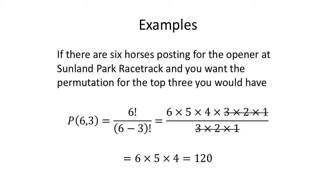The example I use most commonly for permutations takes me to the horse racing track. There's six horses posting for the opener at Sunland Park racetrack and you want the permutations for the top three. There are six horses running. You want to pick win, place and show. That's the top three. You'll have 6 factorial over (6 minus 3) factorial. But remember, factorial is multiplied by every number lower than that. So 6 times 5 times 4 times 3 times 2 times 1. 6 minus 3 is 3. Then I'll do a factorial of 3 times 2 times 1.